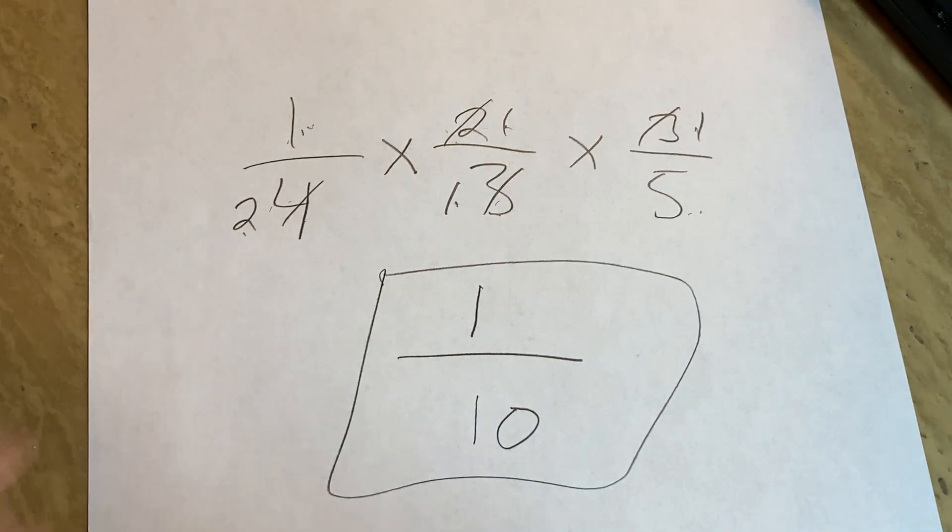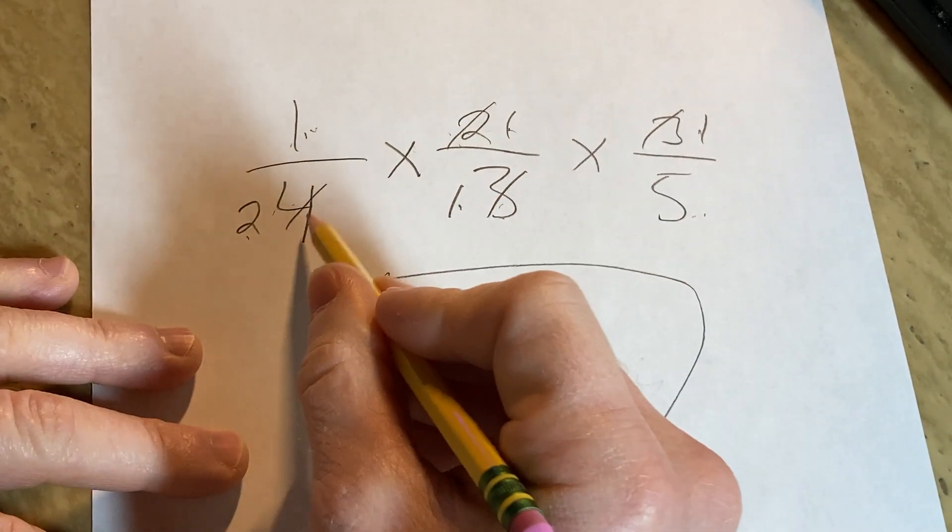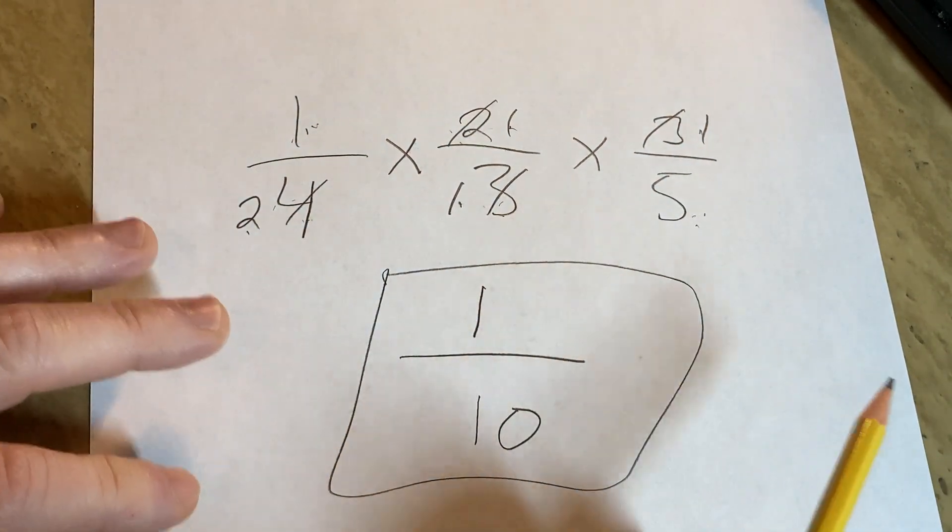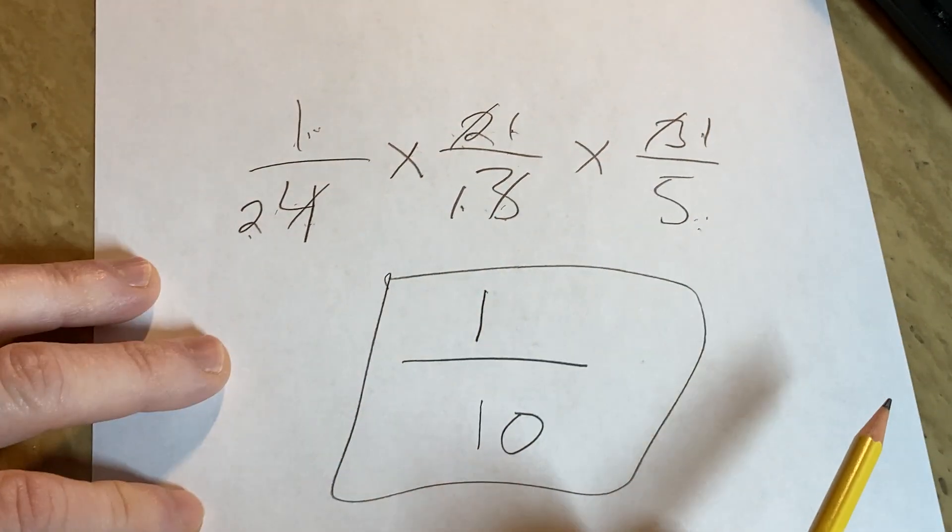And that would be the final answer in this multiplication problem with three fractions. And again, you're allowed to cancel numbers on the bottom with numbers on the top. That's how it works. And then you can just multiply straight across, and you get the answer.